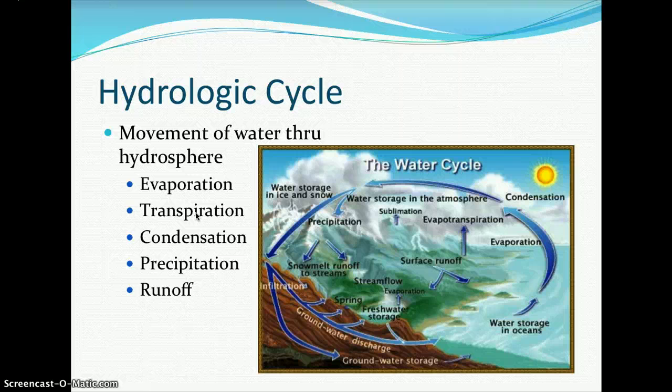As moisture builds up and clouds grow, the condensate falls back to Earth as precipitation — whether sleet, hail, snow, or rain. When water reaches the land surface, it can either infiltrate the ground to become groundwater, or if surfaces are impervious, it will run off into streams and creeks, which eventually flow into the ocean. We will examine the hydrologic cycle further in a class activity.